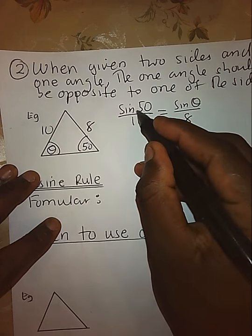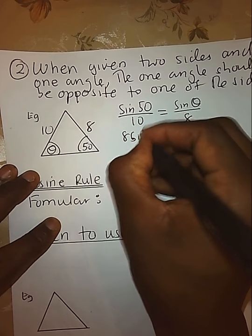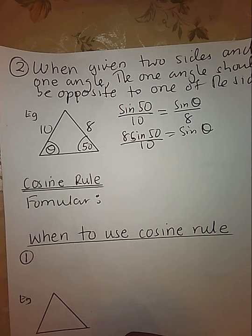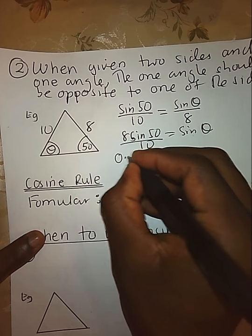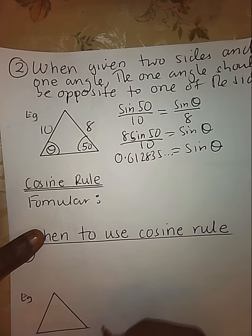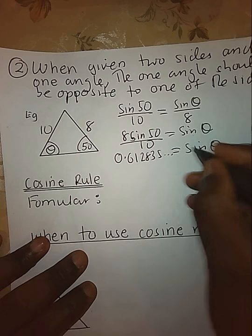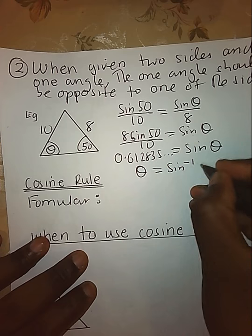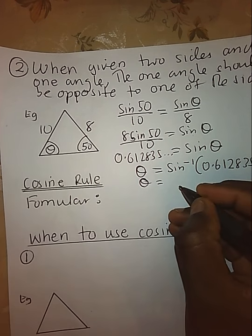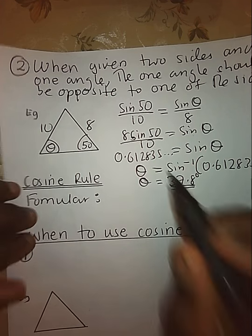I take sine of 50 over 10 equals sine of the unknown angle over 8. Cross-multiplying, 8 times sine 50 over 10 gives sine of the unknown angle, which equals 0.612835. To get the angle alone, I apply sine inverse, so the angle equals sine inverse of 0.612835, giving us 37.8 degrees.